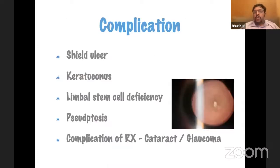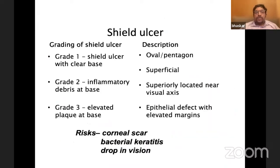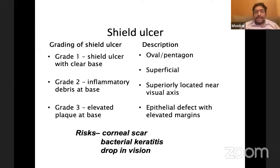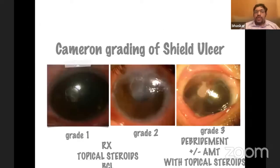Focusing on shield ulcer complications: grade one has an epithelial defect with a clear base; grade two has inflammatory debris at the base; grade three has an elevated plaque at the base. If there is an elevated plaque, it won't respond to just medical measures — you must debride so the epithelium can grow across. It's generally an oval or pentagonal lesion, superficial, located near the visual axis. It could lead to corneal scar, secondary infection, and decreased vision.